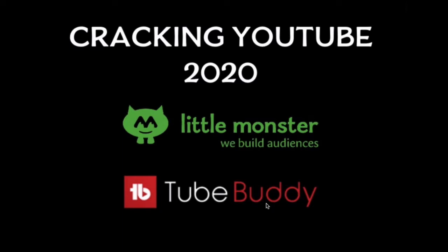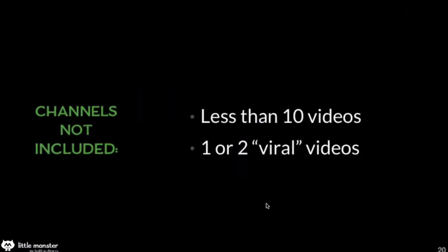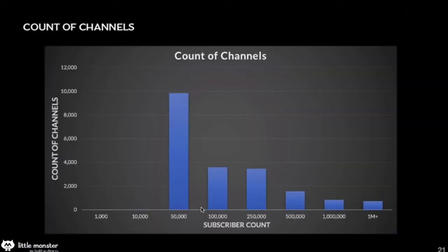They anonymized the data of many thousands of videos — 200,000 videos to be exact, across 20,000 channels. They did not include channels with fewer than 10 videos, and they excluded channels that had one or two outliers — what you might call a viral video that can really skew the data. He looked at channels mostly between 10,000 and 50,000 subscribers, 50,000 to 100,000, 100,000 to 250,000, and so on. The area above a million is the smallest, since there are just fewer channels with that many subscribers.